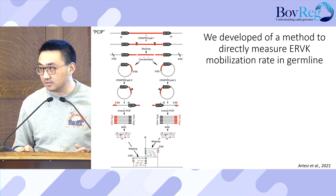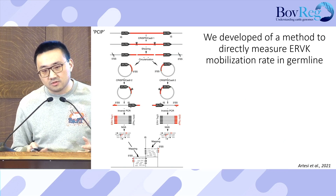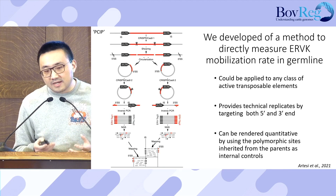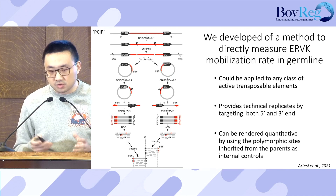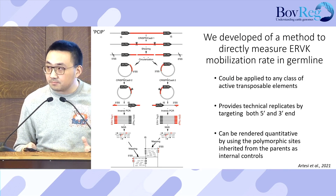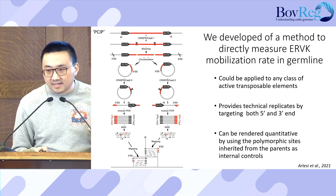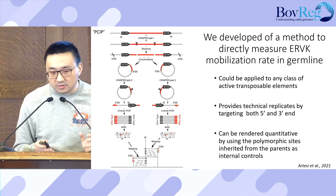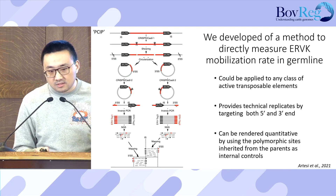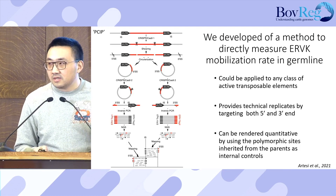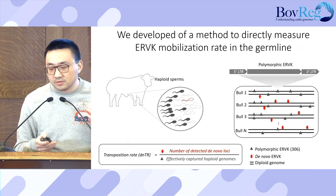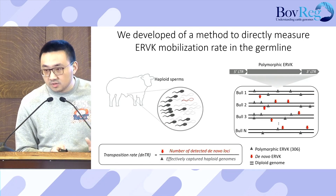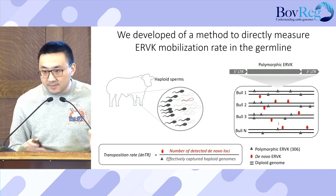I don't have time to go through all the details, but here are notable features of this method. First, it can be applied to any class of active transposable elements. It provides technical replicates by targeting both the 5-prime and 3-prime ends. And it can be rendered quantitative using polymorphic sites inherited from parents as internal controls. We first applied this method to DNA from sperm to study mobilization in the cattle male germline.